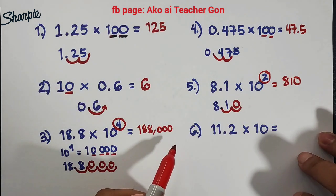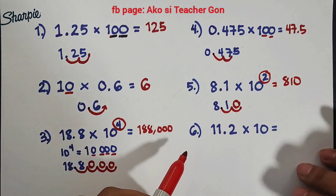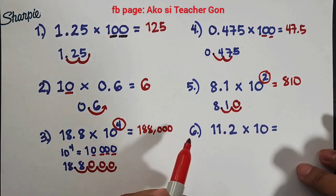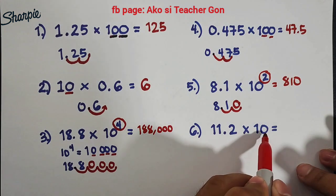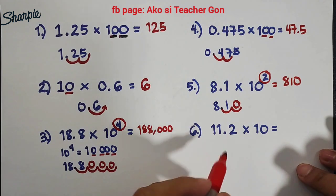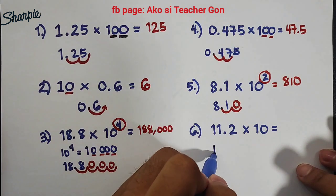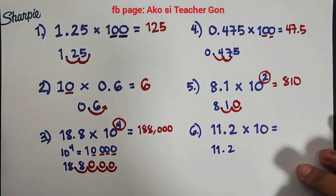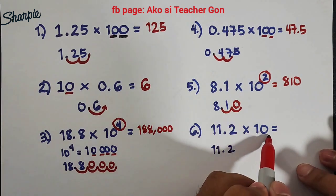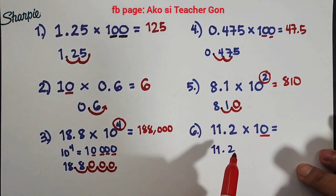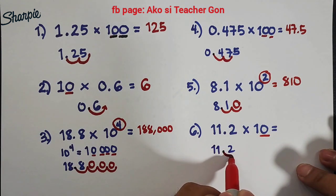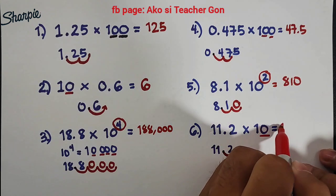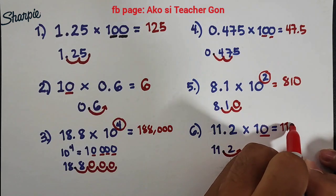And lastly, for number 6, before we proceed with our original problem, we have 11.2 times 10. We have 1 zero here, so we move 1 decimal point, and the answer is 112.